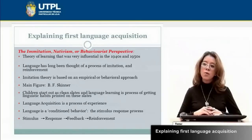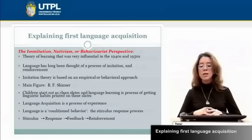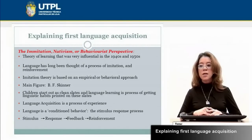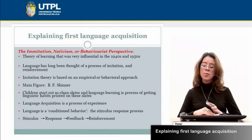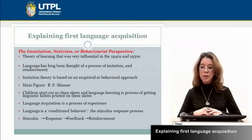We are going to start with the first theory, which is the imitation, nativist or behaviorist perspective. This theory was very influential in the 1940s and 1960s. The main figure of this theory is Skinner, and this theory is based on imitation. Skinner mentioned that language acquisition is a process of experience.